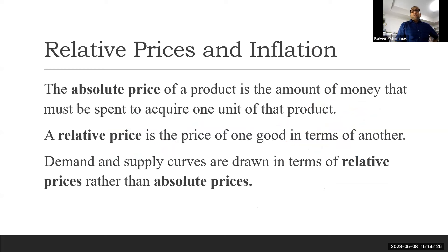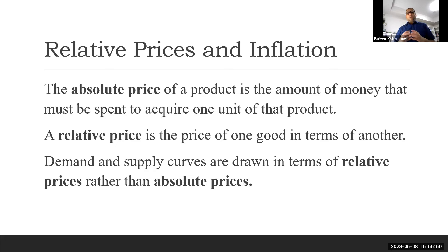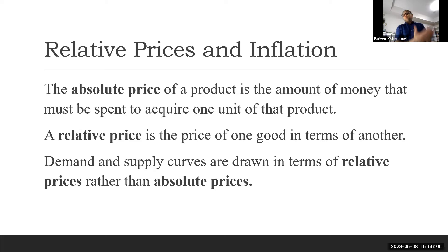What is relative price and inflation? Normally when we measure inflation in any country, that is a relative price — how much the price of a basket of goods changes, which is what we call inflation. The absolute price is the money we pay to acquire one unit of a product. The relative price is the price of one good in terms of another — for example, how many apples we must sacrifice to get another food. Demand and supply curves are drawn in terms of relative price rather than absolute prices.